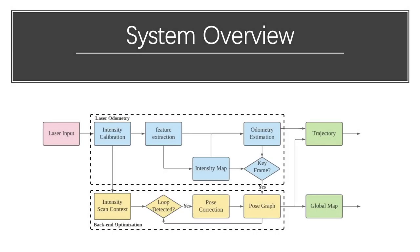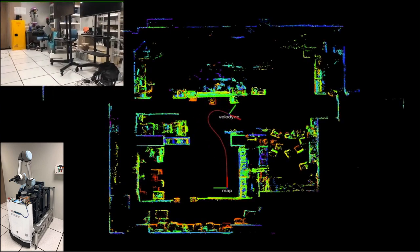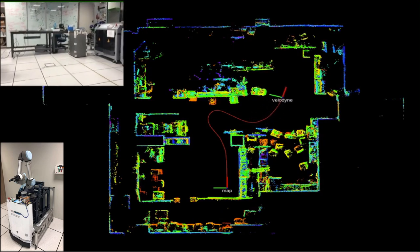Traditional LiDAR-based SLAM mainly leverages geometry features from point clouds, and the intensity feature is ignored. In this paper, we first look into the intensity feature and analyze the possibility of introducing intensity features to a SLAM system.